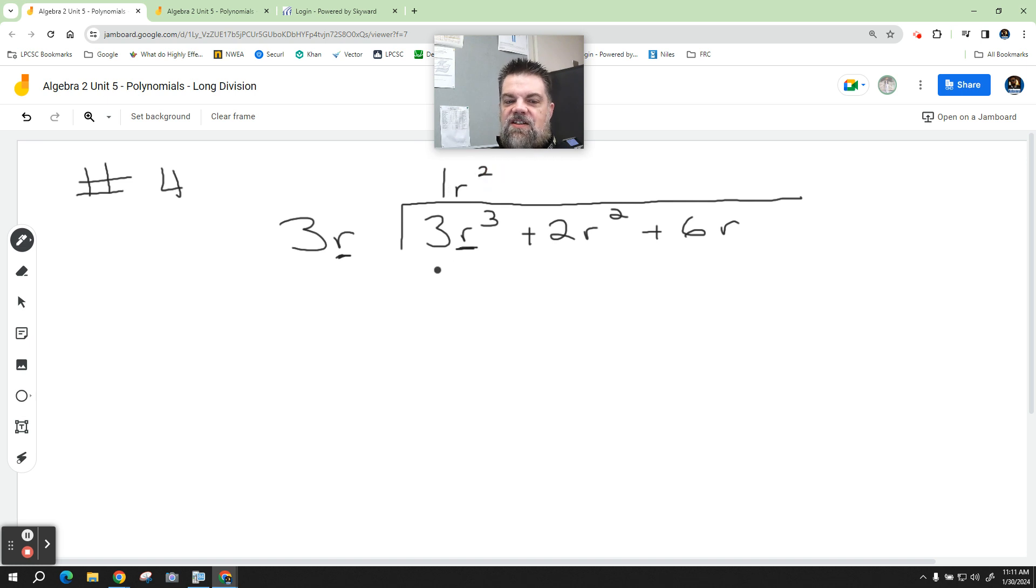So this becomes 3r cubed. There's only one term, there's nothing else to multiply it by. Add the opposite, that cancels. What do we do next? Drop down the 2r squared. Now here's the tricky part.